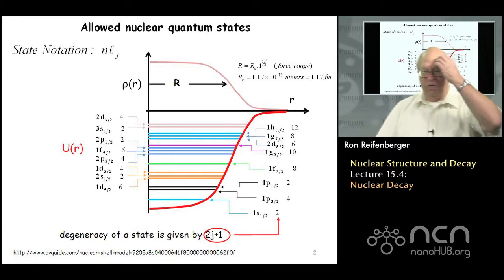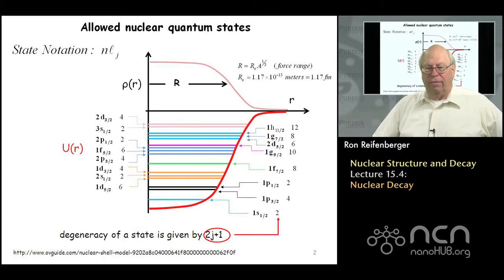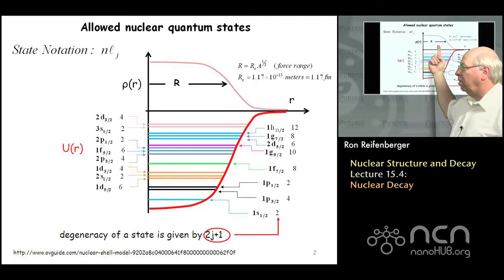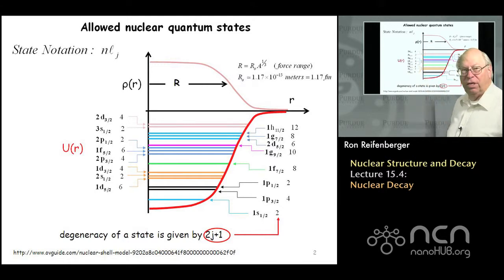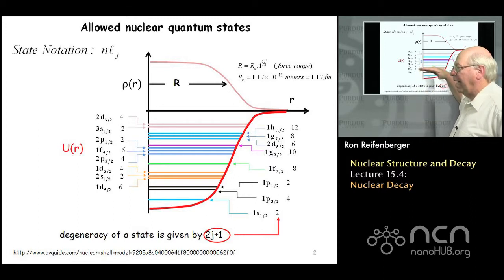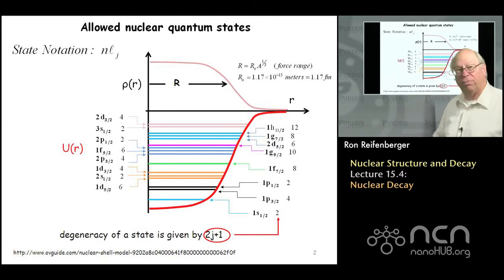Before we do that it's probably useful to very quickly summarize what we learned in the last lecture. We discussed the allowed nuclear quantum states in the nuclear potential well. There's a radius r that characterizes the mass density of a nucleus, and that radius r varies with the atomic mass number. Once you have the radius r of the nuclear potential well you can calculate quantum mechanically the allowed nuclear states that fill up the nuclear potential to accommodate all the nucleons.